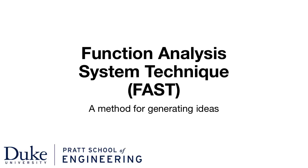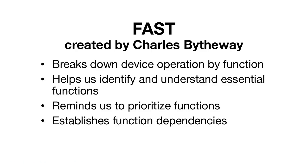The Function Analysis System Technique, or FAST, is a method for generating ideas for a new product or for improvements to an existing design or product. FAST is a way to break down the operation of a device by its functions. When we do this correctly, we are forced to strip down the functions to their most basic level and prioritize those functions which are more important than others. The method also helps us establish function dependencies.